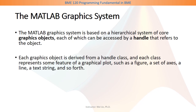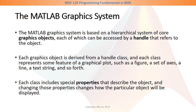Each graphics object is derived from a handle class, and each class represents some feature of a graphical plot, such as a figure, a set of axes, a line, a text string, and so on. Each class includes special properties that describe the object, and changing those properties changes how the particular object will be displayed.